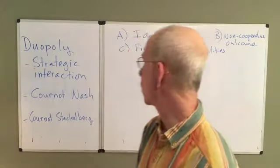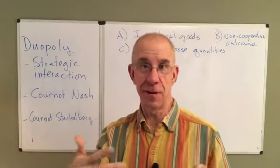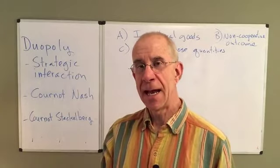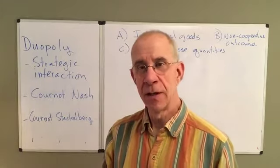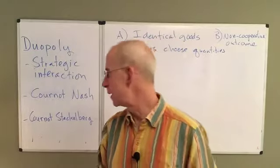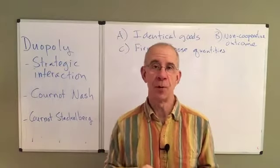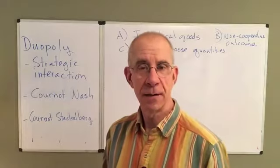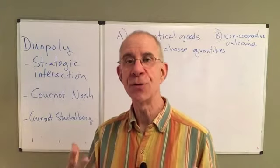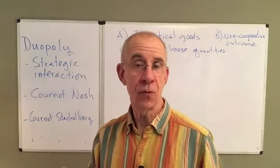When we have a duopoly, when I make a decision, it's going to affect the other firm and vice versa. We don't ignore what the other firm might do. This is a tricky thing to analyze because my behavior depends on your behavior. The concept we're going to be using to start with is the so-called Cournot-Nash. John Nash was the person who figured out how to deal with this complicated issue of strategic interaction among small groups of people.